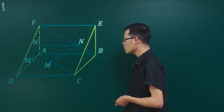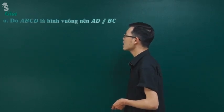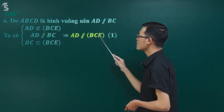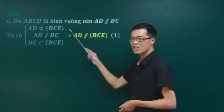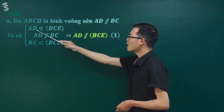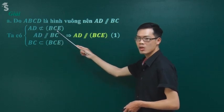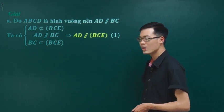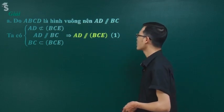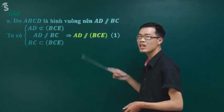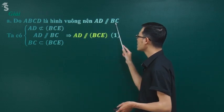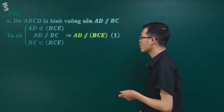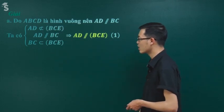Trình bày ý A: Vì ABCD là hình vuông nên AD song song BC. Đường AD không nằm trong mặt phẳng BCE nhưng lại song song BC nằm trong BCE, nên kéo theo AD song song mặt phẳng BCE. Tương tự, ABEF là hình vuông nên AF song song BE. BE cũng nằm trong BCE, kéo theo AF song song mặt phẳng BCE. Từ 1 và 2, kết hợp với AD và AF cắt nhau tại A và cùng nằm trong mặt phẳng ADF, ta suy ra mặt phẳng ADF song song mặt phẳng BCE. Đây là trình bày đầy đủ chi tiết nhất.